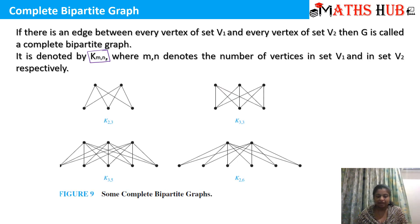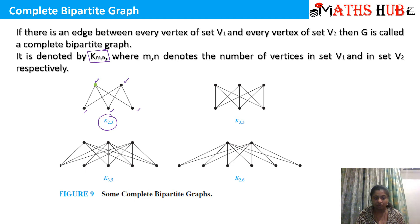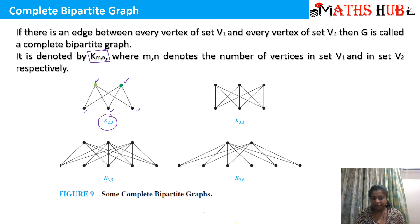Let's see some examples of complete bipartite graphs. The first example is K2,3, meaning the graph has 5 vertices with 2 in the first set and 3 in the second set. You can see that the first vertex in set 1 is joined with all 3 vertices in set 2. Similarly, the second vertex in set 1 is also joined to all 3 vertices in set 2.